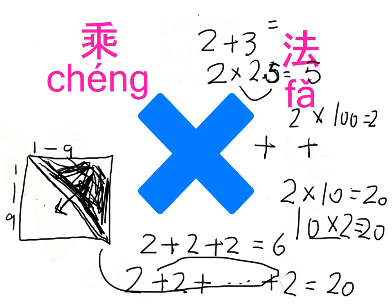For example, 2乘以100 — you cannot say 2 plus 2 plus 2 all the way to 200. That would be too much. And later, when we get to exponential numbers — 我们到了指数的时候 — we have to say 100 multiply 100. We can write it as 100 multiply 100, or later we can just put a 2 right here as an exponent. That would be another step up to make life easier when we have to do the same thing again and again. That means 100 multiplied by 100.